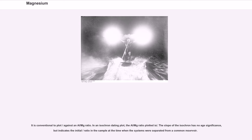It is conventional to plot isotope ratios against an Al-Mg ratio. In an isochron dating plot, the Al-Mg ratio is used. The slope of the isochron has no age significance, but indicates the initial ratio in the sample at the time when the systems were separated from a common reservoir.